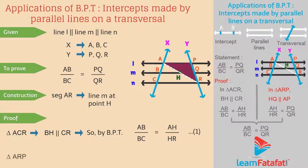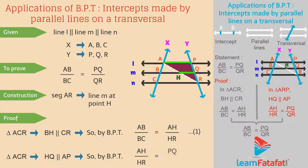Now, consider triangle ARP. In this triangle, HQ is parallel to AP. So, by BPT, AH divided by HR is equal to PQ divided by QR. Consider this as relation 2.